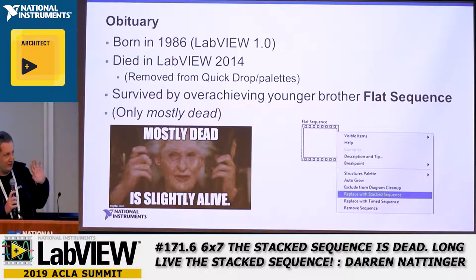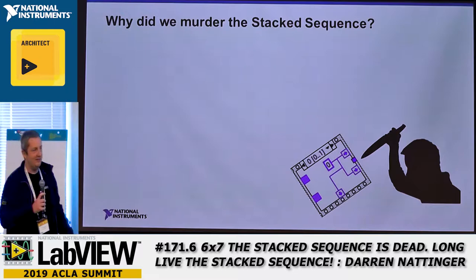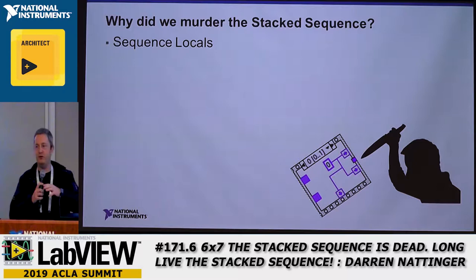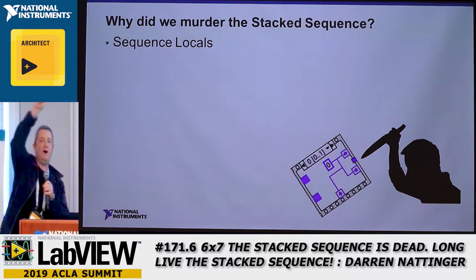Why did we murder the stack sequence structure? The main reason is because of sequence locals. Sequence locals are terrible. It's the only way — besides a local or a global — where you can pass data from one frame to another. You pass data to the right side of the sequence local, then in the next frame you've got this wire that has to come all the way over and it just looks so stupid.